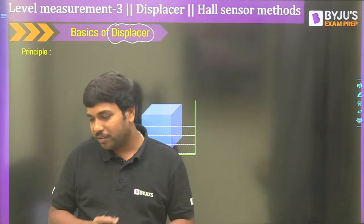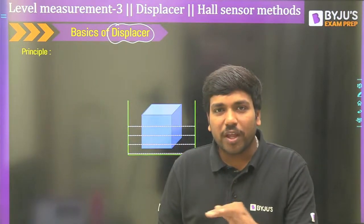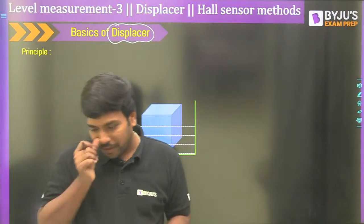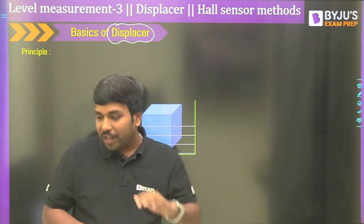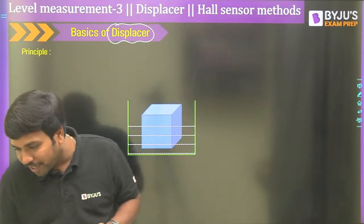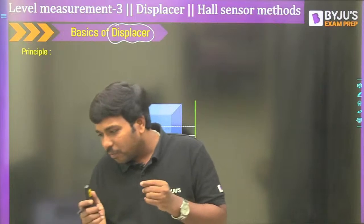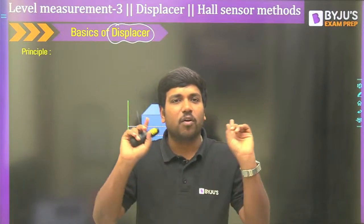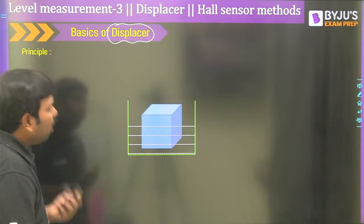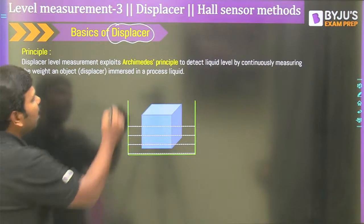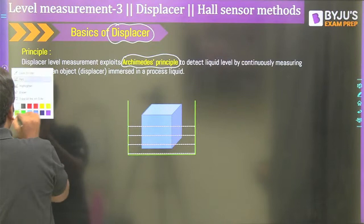Let's start the discussion from the very fundamentals, because most students haven't gone through the concept of the displacer. The basic idea of the displacer works on the Archimedes principle. Suppose we have a container with water inside. Let us take a solid cube — with length, height, and width all equal to L — so the volume of the cube is L³ (in cubic meters).